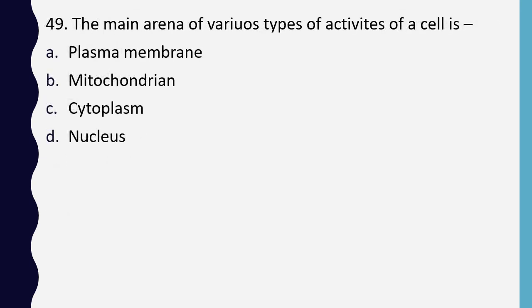Question 49. The main arena of various types of activities of a cell is: plasma membrane, mitochondria, cytoplasm, or nucleus. The correct answer is option C: cytoplasm.